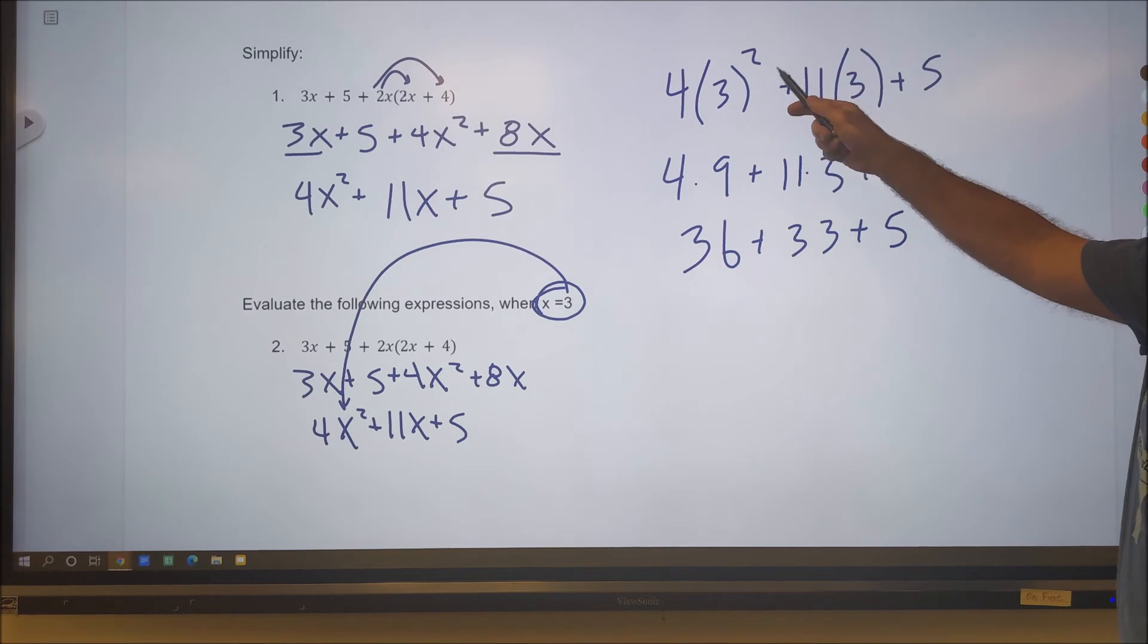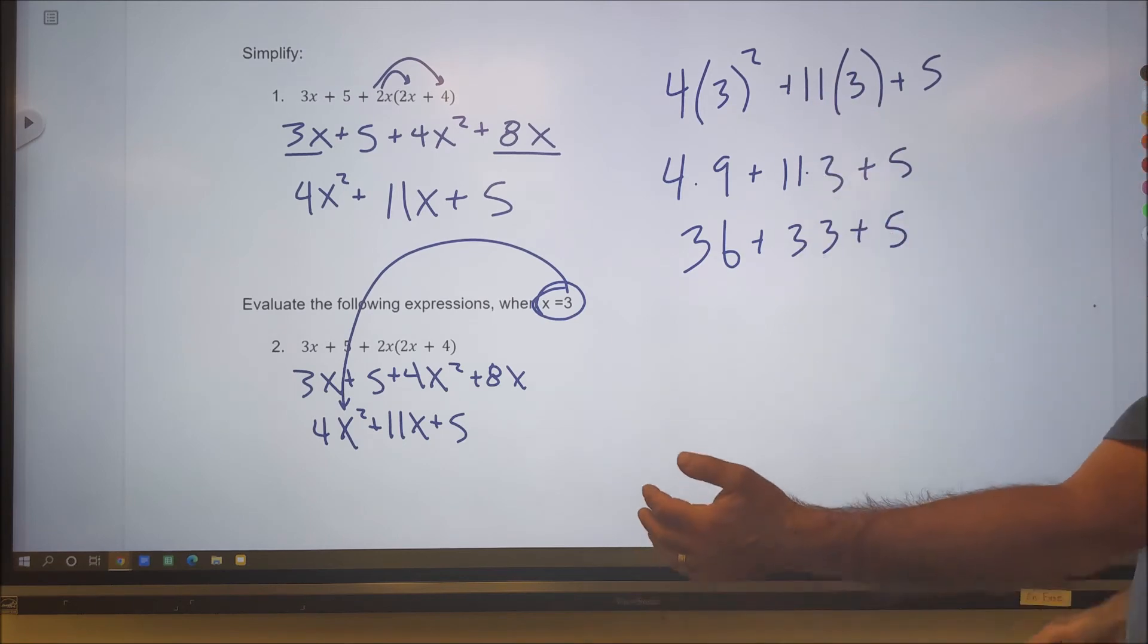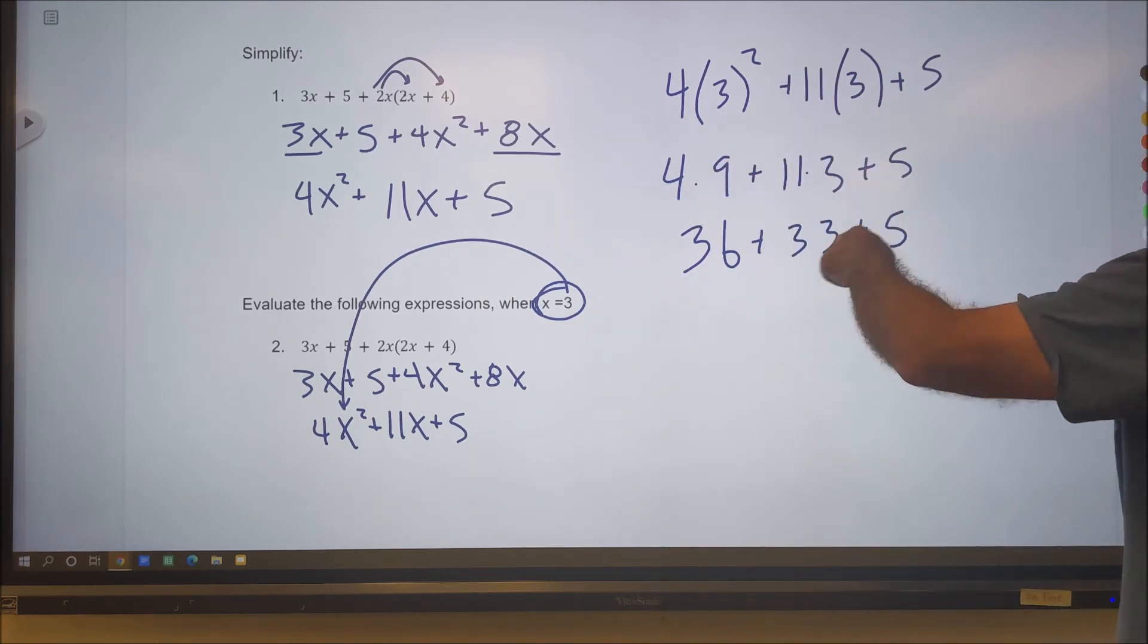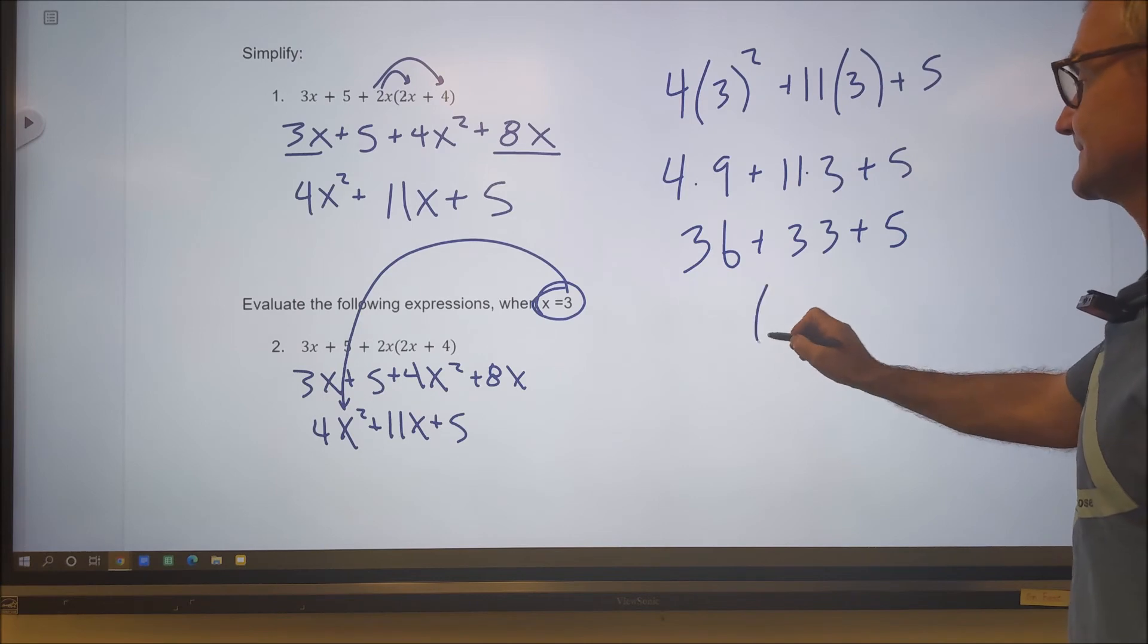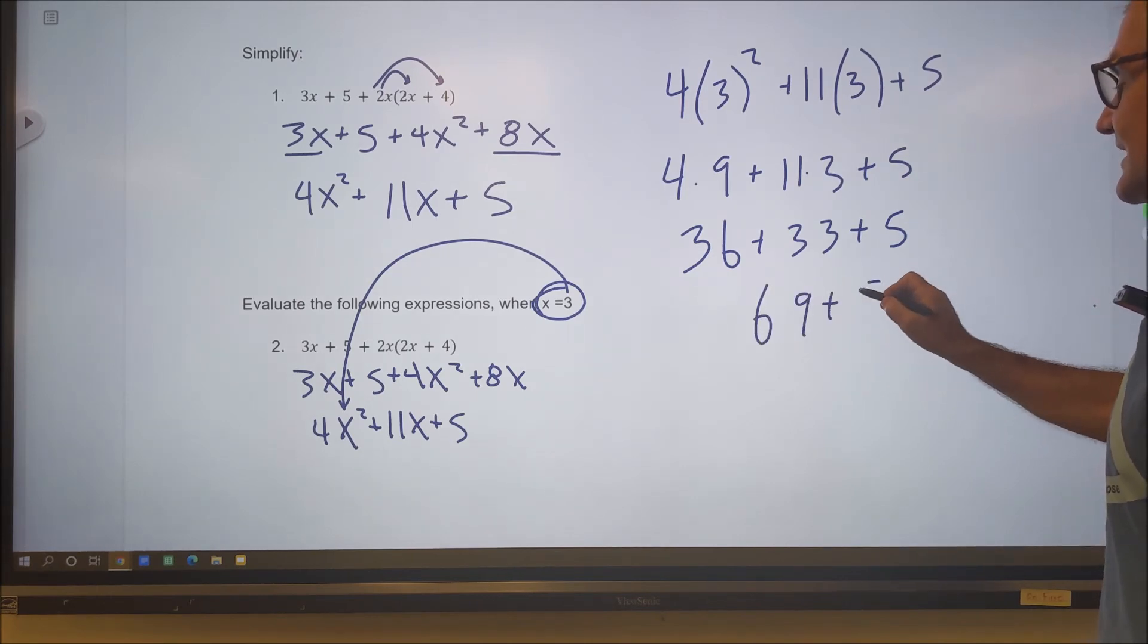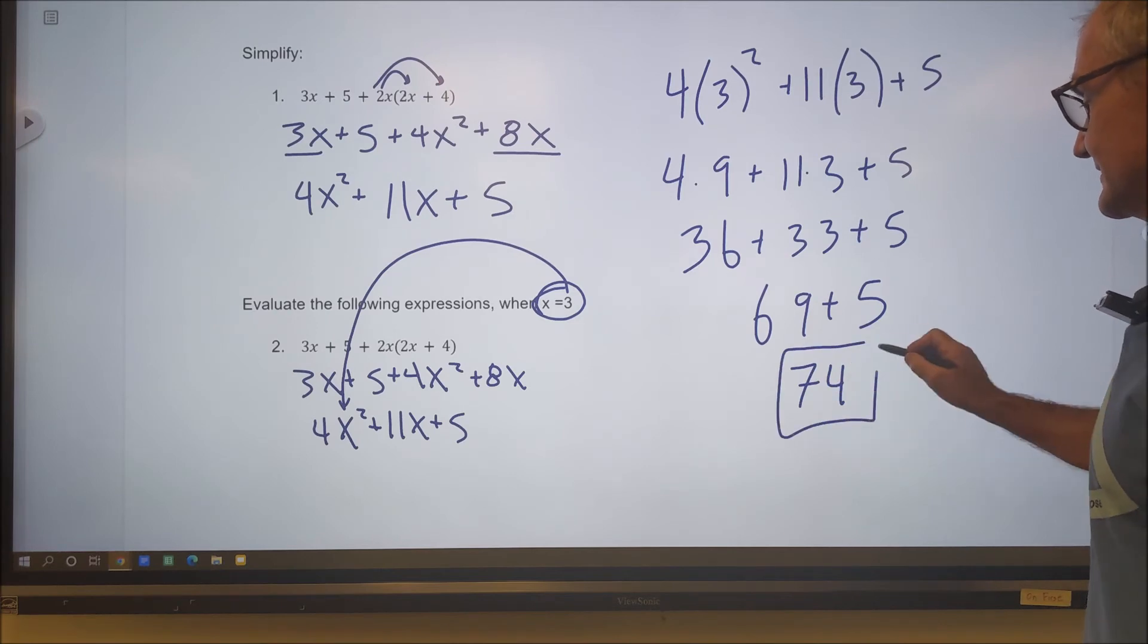Order of operations. I have to do my parentheses first, but they're all combined. Next my exponents. 3 squared is 9. So I have 4 times 9 plus 11 times 3 plus 5. 4 times 9 is 36. 11 times 3 is 33. And then 5. So now I have 36 plus 33, 69. 69 plus 5 is 74. And then that's my answer right there.